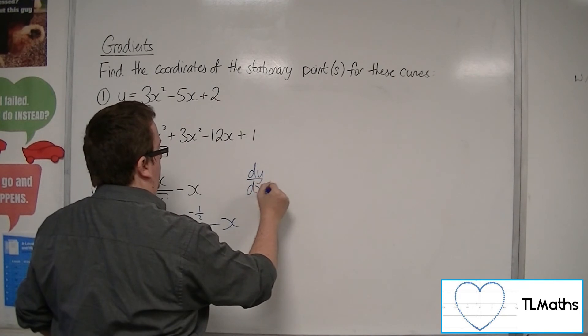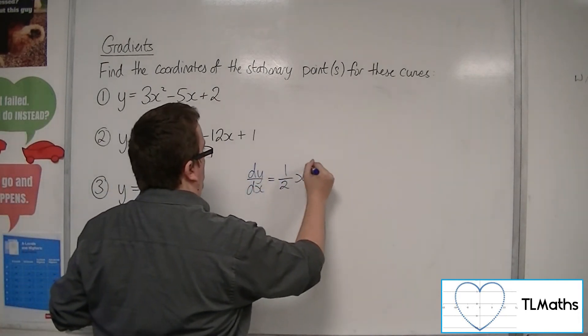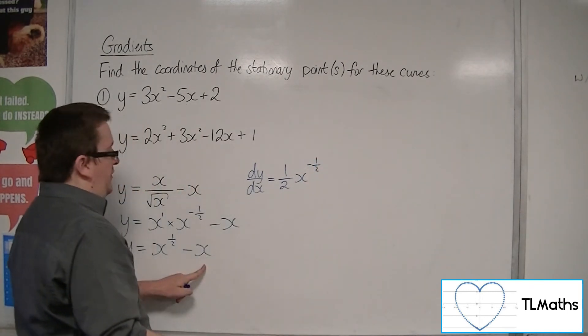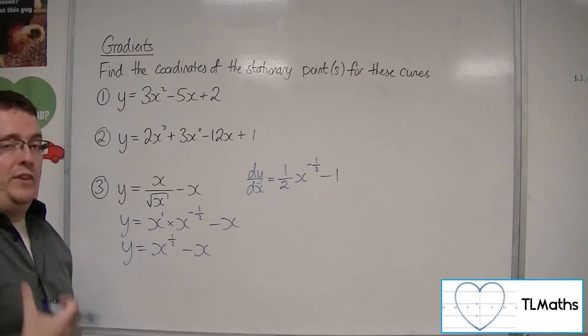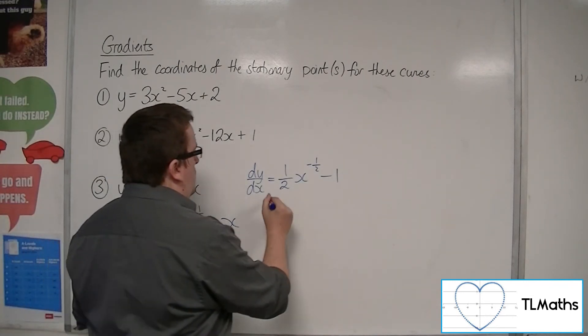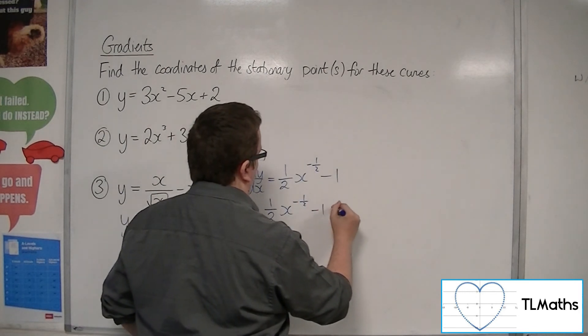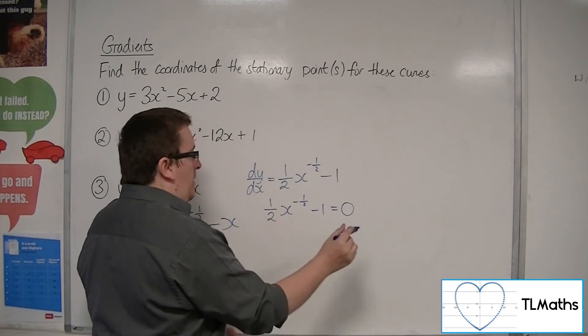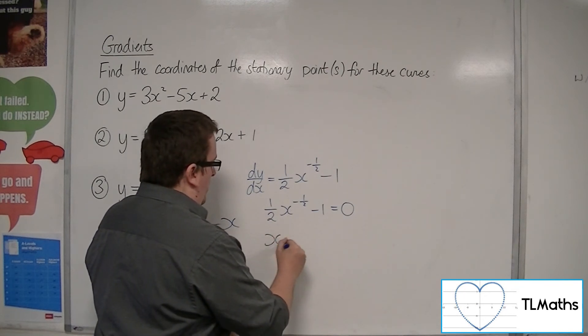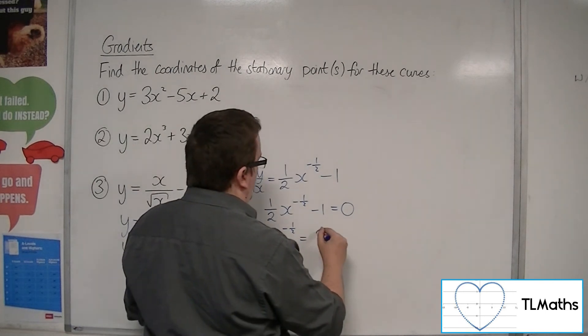So dy/dx: half comes down to the front, take 1 off the power, and the minus x differentiates to minus 1. Stationary points exist when this is equal to 0. So if I add the 1 to both sides and times both sides by 2, I'll get x to the minus 1 half is equal to 2.